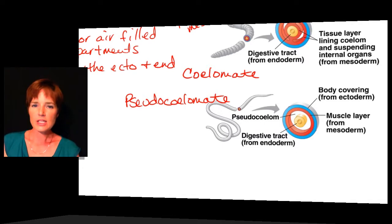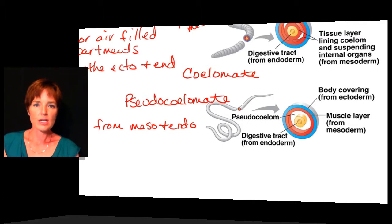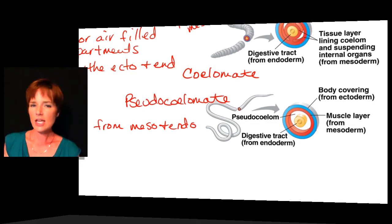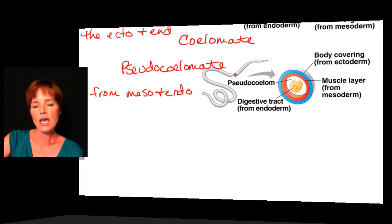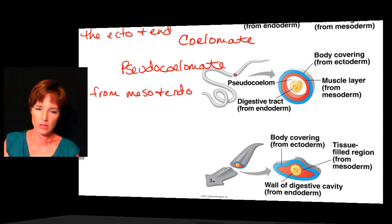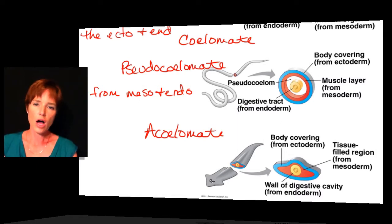We can also have what's called a pseudocoelom, and these would be pseudocoelomate organisms. This is formed a little bit differently — it is formed from both mesoderm and endoderm together. It's still an empty cavity, not tissue-filled but may have fluid, and still separates the digestive tract from the body wall. Lastly, we have what's called acoelomate organisms, which don't have any type of body cavity at all — they are solid tissue with no hollow cavity developed from the mesoderm or endoderm.